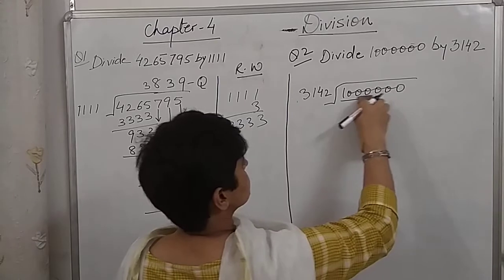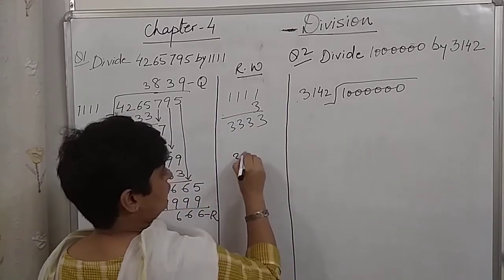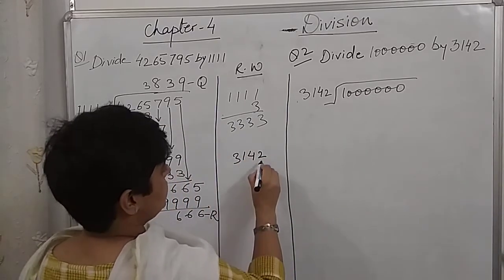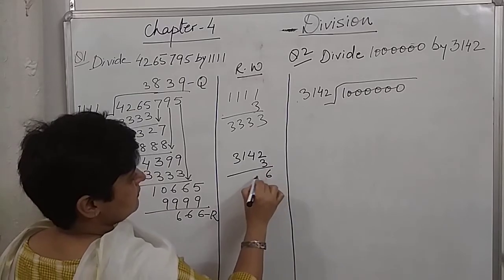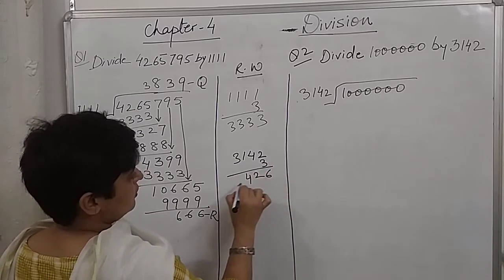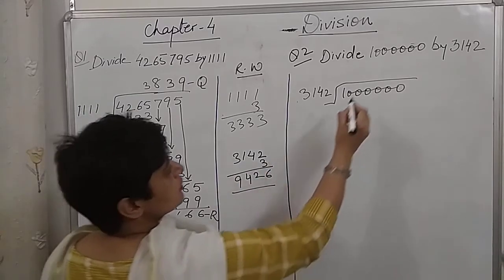So, we need to take the next digit in as partial dividend in the first step. So, 3142 multiply by 3, 6, 2, 1, 4, and 9.